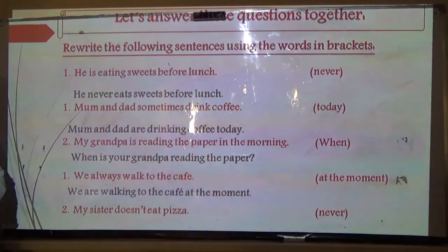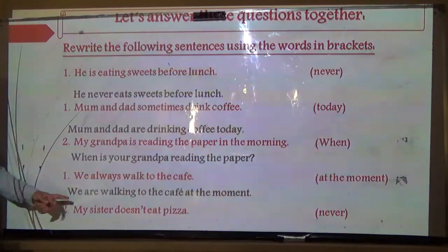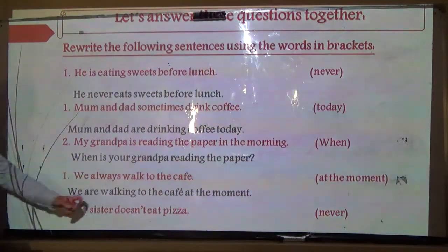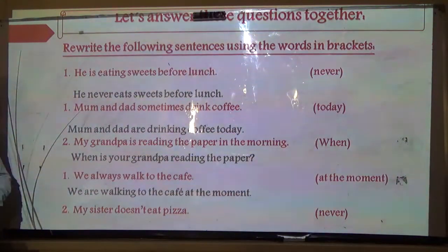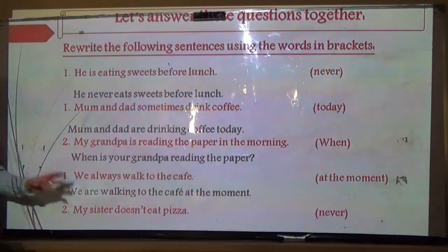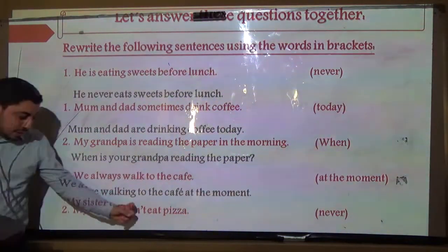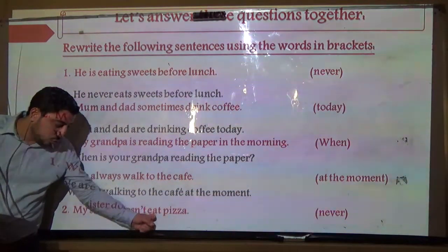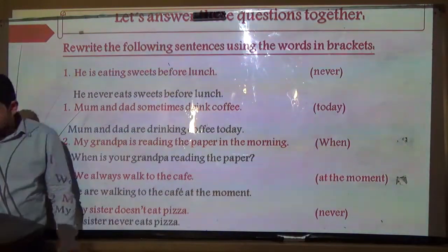Last sentence: 'My sister doesn't eat pizza' — rewrite using 'never.' We remove 'doesn't' and insert 'never,' but don't forget to add S to the verb since 'sister' is singular. Answer: 'My sister never eats pizza.'